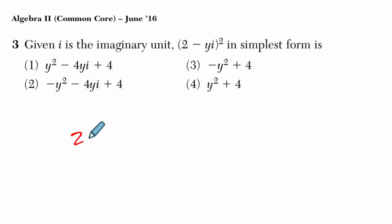Okay, so we have 2 minus yi, and we're squaring that. So I'm going to write it like this, 2 minus yi.